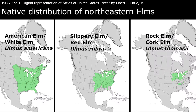Here's a set of range maps showing the distribution of the elms native to northeastern North America. White elm, or American elm, is the most widespread and most common. Red elm, or slippery elm, is almost as widespread but less common. Rock elm is the rarest, has the smallest distribution, and tends to occur fairly patchily within its range.